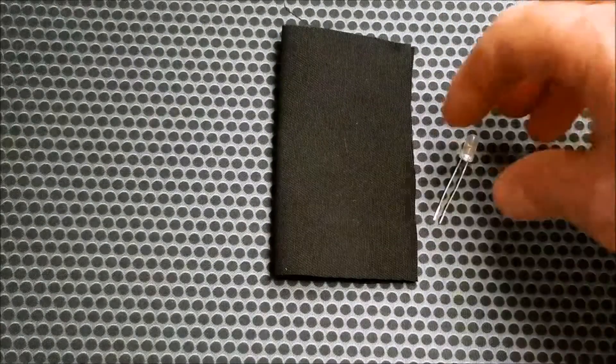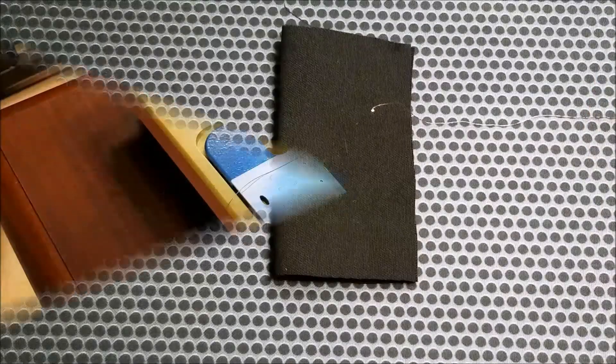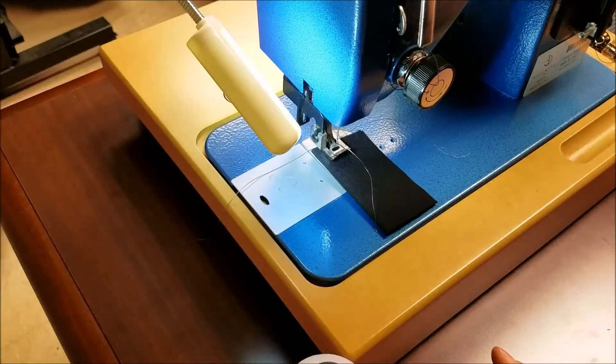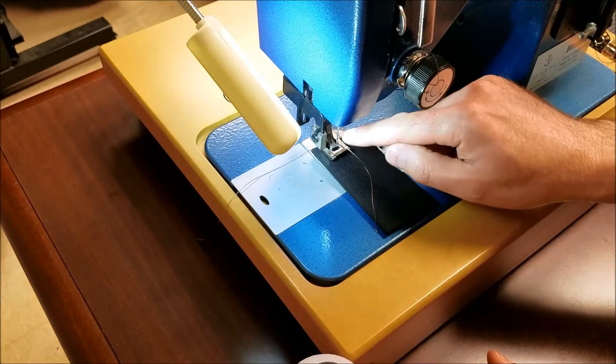We're not going to use a standard LED; we're going to use this very tiny LED so that the end result is unobtrusive. You'll see here what I've done is I've removed the standard top thread from this sewing machine and I've threaded both leads of this very tiny LED through the needle.